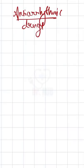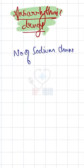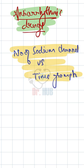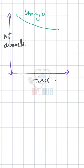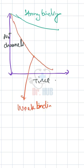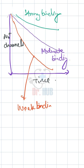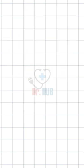Anti-arrhythmic drugs: number of sodium channels versus time graph. The y-axis includes the sodium channels, the x-axis is the time, and the graph is labeled with strong binding, weak binding, and moderate binding.